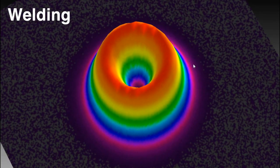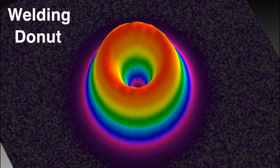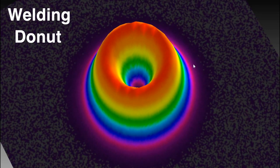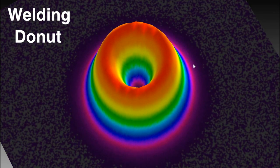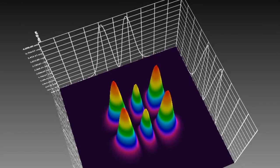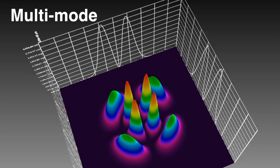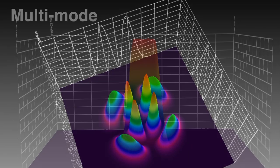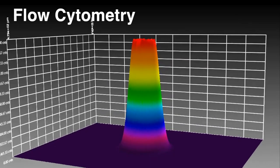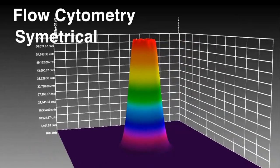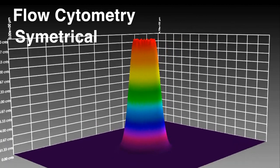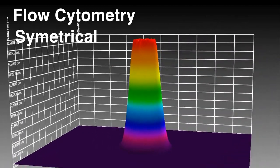For welding, a donut mode, also called a Bessel or TEM01 asterisk mode, is advantageous, but with new material combinations requested to be welded, even multi-spot arrangements like a Mickey Mouse shape or with a square center beam gain importance. For flow cytometry cell sorting, a very stable beam profile with symmetrical energy distribution and a proper power density is required.